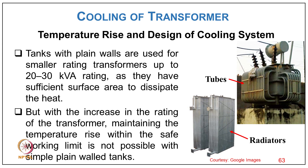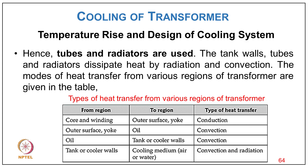For temperature rise and cooling system design: tanks with plane walls are used for small ratings up to 20–50 kVA as they have sufficient surface area to dissipate heat. With increasing rating, maintaining temperature rise within safe working limits is not possible with simple plane wall tanks. Hence tubes and radiators are used, and the tank wall, tubes, and radiator dissipate heat by radiation and convection.